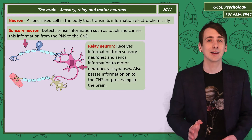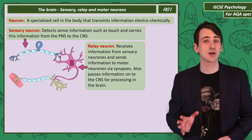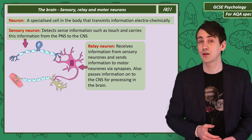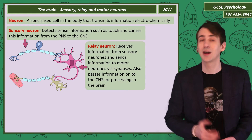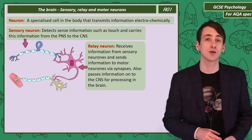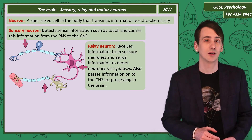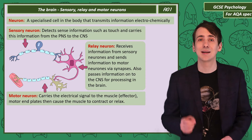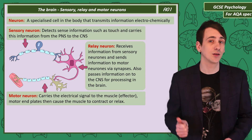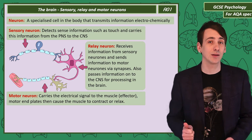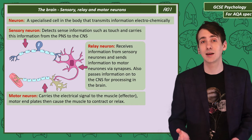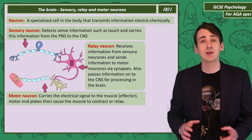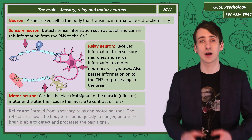The relay neuron in pink detects information from the central nervous system, can pass information to the central nervous system for processing, and can also pass information to motor neurons. Motor neurons, drawn here in green, detect information from relay neurons and will carry this information to the muscle, making it contract or relax. Together this collection of neurons is called the reflex arc.